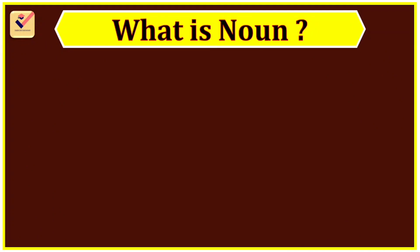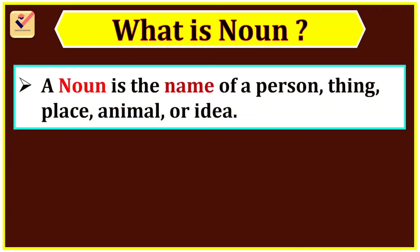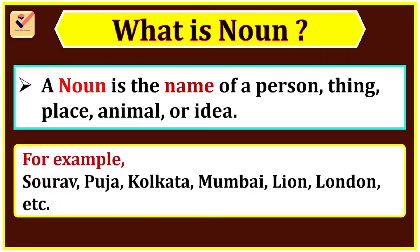What is a Noun? A noun is the name of a person, thing, place, animal, or idea. For example: Sourav, Pooja, Kolkata, Mumbai, Lion, London, etc.